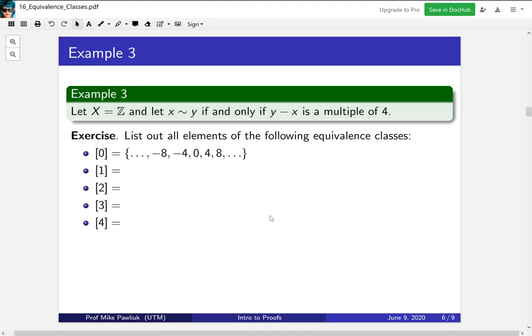Alright, let's look at one last example. And for this one, I want you to work through some things. So let X be the integers, and we'll say that x is related to y if and only if y minus x is a multiple of four. So this is a somewhat technical property, but if you work through a couple, it becomes clear what's going on. So I want you to list out all of the following equivalence classes.